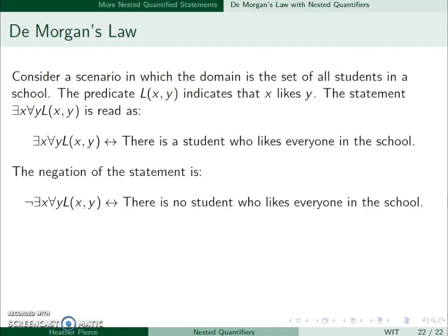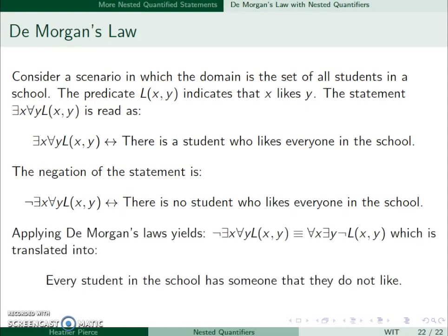Applying De Morgan's Law, the existential will change to universal, universal will change to existential, and we negate the predicate. So now we have ∀x∃y ¬L(x,y). So every student in the school has someone that they don't like.